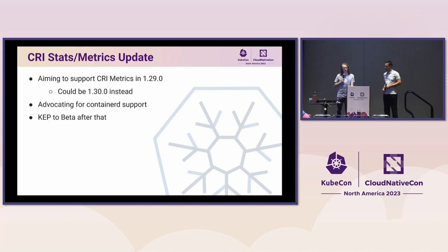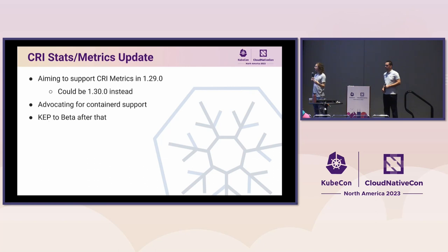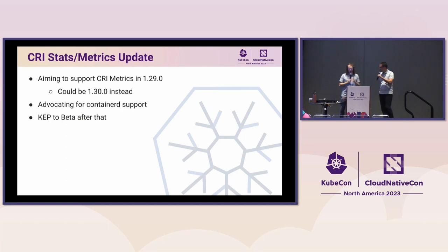These are some of the things we're hopeful about in metrics collection. To be honest, we haven't finished it yet — we're aiming for Kubernetes 1.29, but it might slip to 1.30. It's a hard process and, because it's so entrenched, we want to get it right and not rush in an incomplete solution. We've also been working with the containerd community advocating for them to add support. Once both of us are finished, we'll push the feature to beta and eventually GA, dropping CAdvisor from the business of collecting pod and container stats.